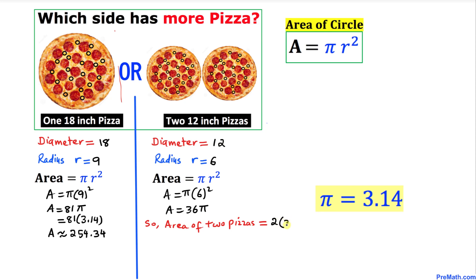2 times 36π means that the total area of these two pizzas turns out to be 72π. We know that π has a value of 3.14, so let's calculate: 72 times 3.14.